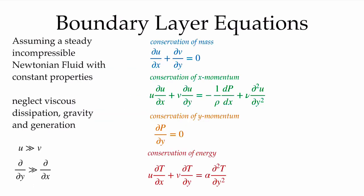For a two-dimensional, incompressible, steady-state condition with constant properties, a Newtonian fluid, we've neglected viscous dissipation, gravity, and any thermal energy generation. We've applied the assumptions that the u-velocity, parallel to the surface, is much greater than the v-velocity perpendicular to the surface, and that changes perpendicular to the surface are much greater than changes parallel to the surface. These are our boundary layer equations — four coupled partial differential equations: conservation of mass, conservation of x-momentum, conservation of y-momentum, and conservation of energy. These are significantly simplified compared to the Navier-Stokes equations, and much easier to solve.